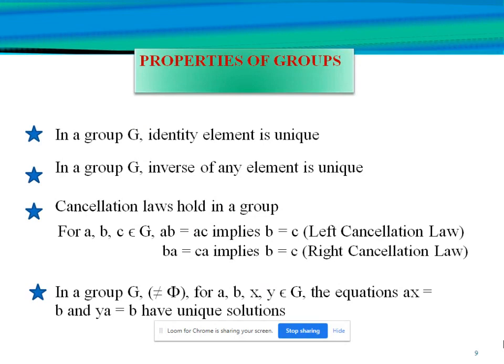Next we will discuss properties of groups. First, in a group G, the identity element is unique. Second, in a group G, the inverse of any element is unique. Third, cancellation laws hold in a group: for a, b, c belonging to G, if ab = ac, then b = c by the right cancellation law. Finally, in a group G, for a, b, x, y belonging to G, the equations ax = b and ya = b have unique solutions.